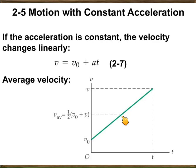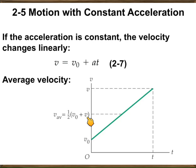You can always ask the average velocity for a constant accelerated motion, and if your motion is limited in time — for example, starting from zero to a specific value of time — the average velocity is always the midpoint. And this midpoint is nothing but the final velocity plus the initial velocity divided by two. Remember that.